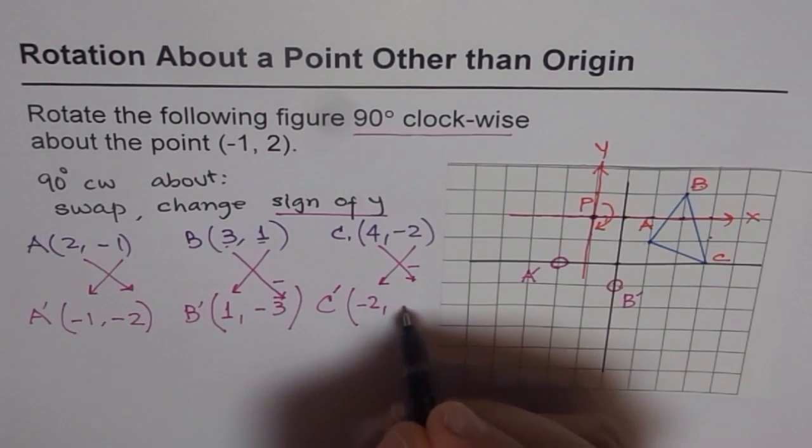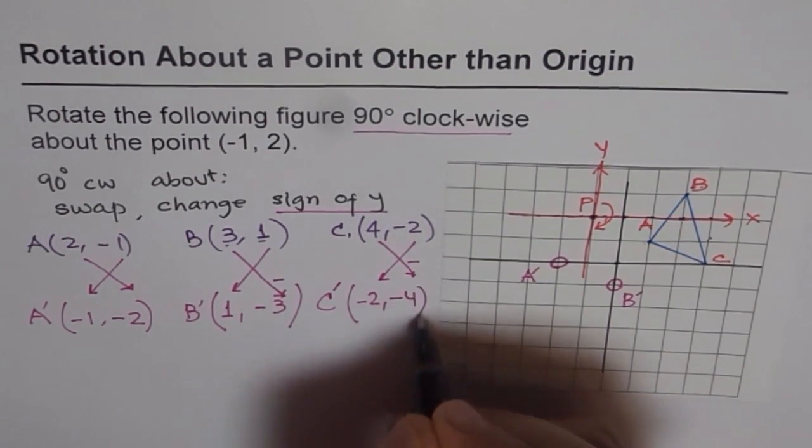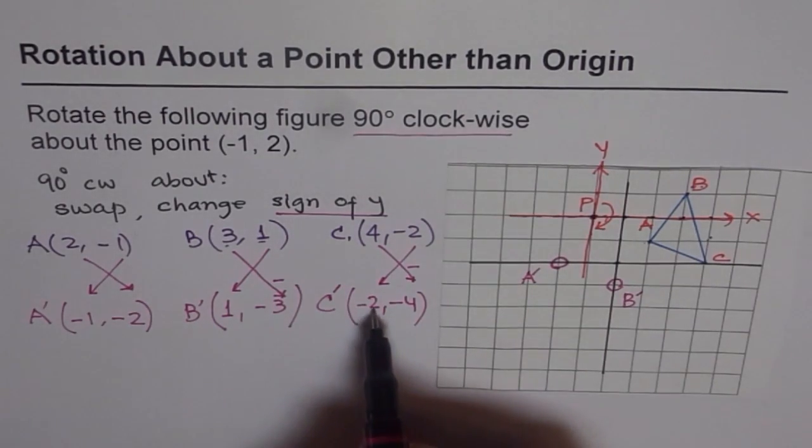It is positive, it becomes negative 4. So C is negative 2, negative 4.